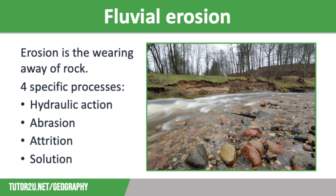Let's start off by thinking about erosion. This is the wearing away of rock and there are four specific processes that you need to know. We have hydraulic action, which is the sheer force of fast flowing water hitting the riverbanks and beds and forcing water into cracks. This compresses the air in the cracks and weakens the rock. It causes vertical erosion in the upper course and lateral erosion in the middle course, especially when fast flowing water hits the outside of a meander bend, leading to meander migration.